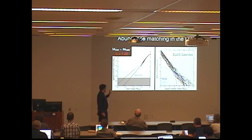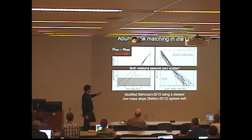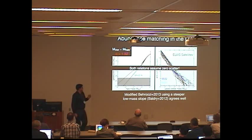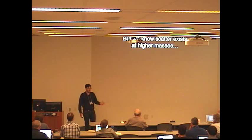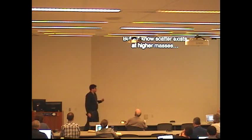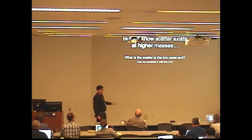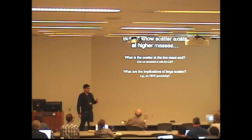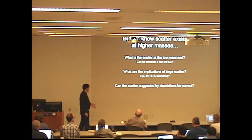However, there's a big caveat to all of this, which is that both of these relations are assuming zero scatter in the abundance matching relationship, in the M-star and halo relationship. But we know that's not right. We know there's scatter at higher masses. Specifically, Peter quotes 0.2 decades of scatter at all masses down to where his line runs out. So we wanted to ask: what happens when you add scatter? What is the scatter at the low mass end? Can we constrain that scatter with the local group?